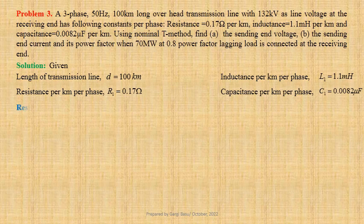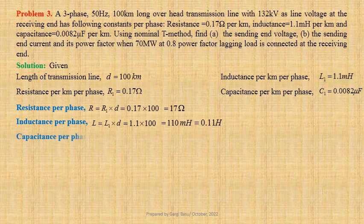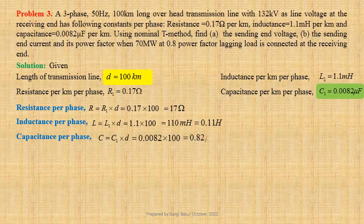Now we shall calculate resistance per phase: R = R1 × D = 0.17 × 100 = 17 ohm. Inductance per phase: L = L1 × D = 1.1 × 100 = 110 mH = 0.11 H. And capacitance per phase: C = C1 × D = 0.0082 × 100 = 0.82 microfarad = 0.82 × 10⁻⁶ farad.